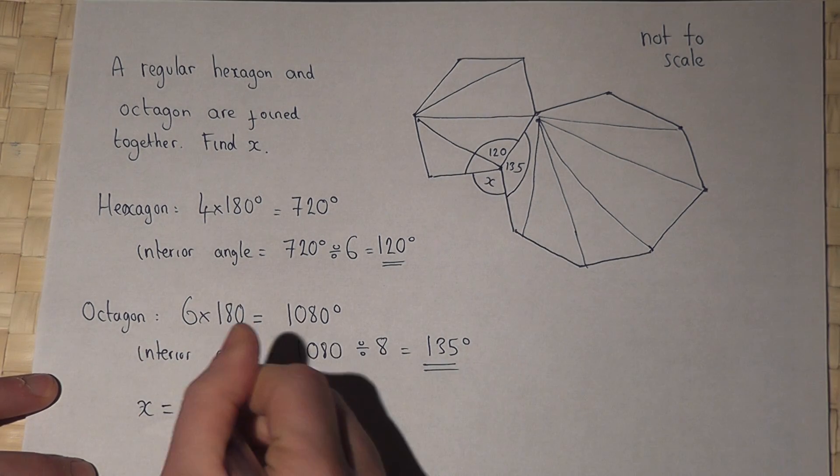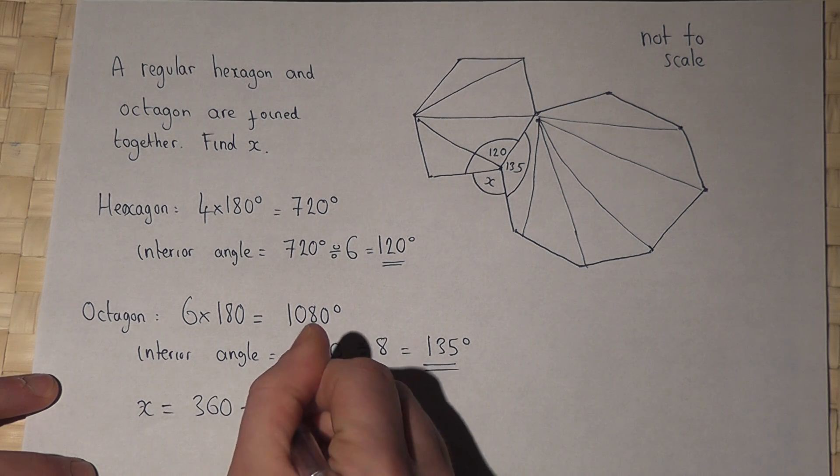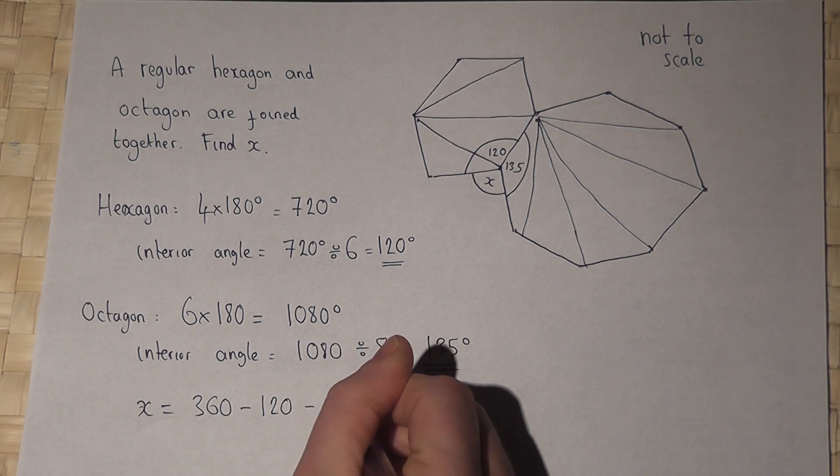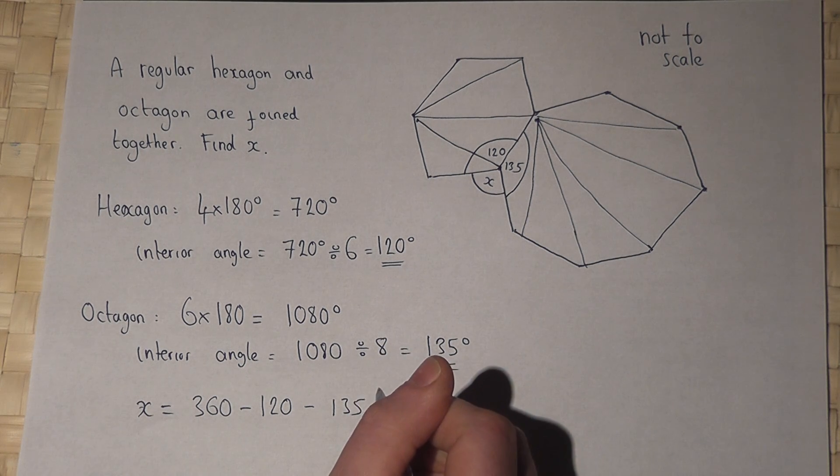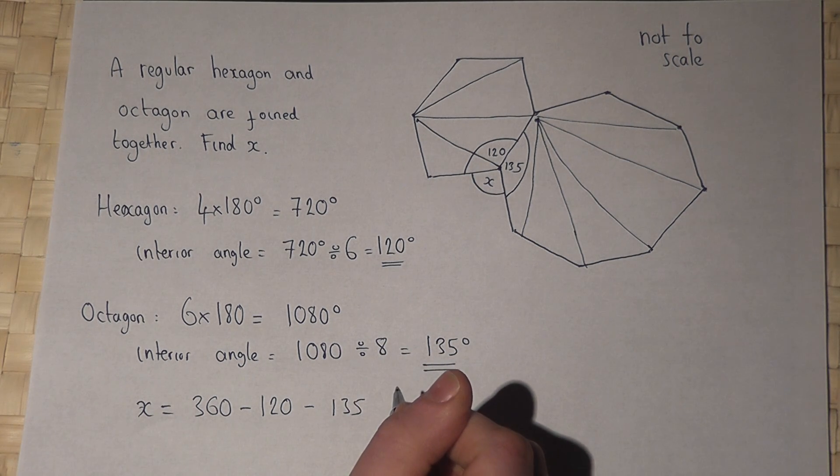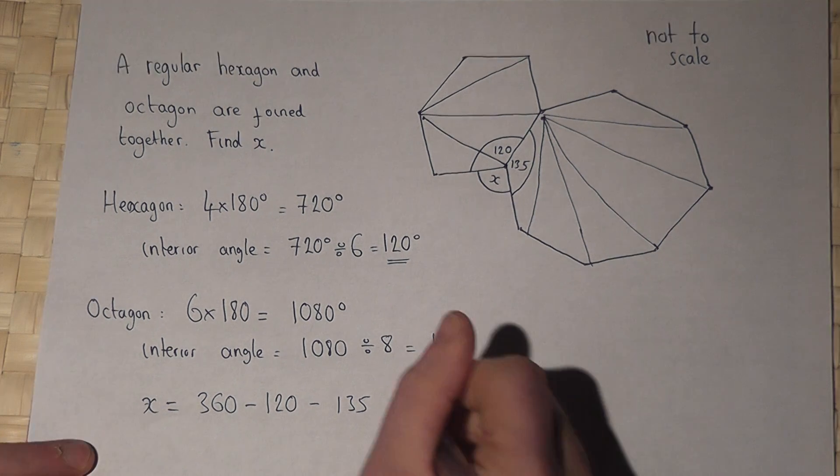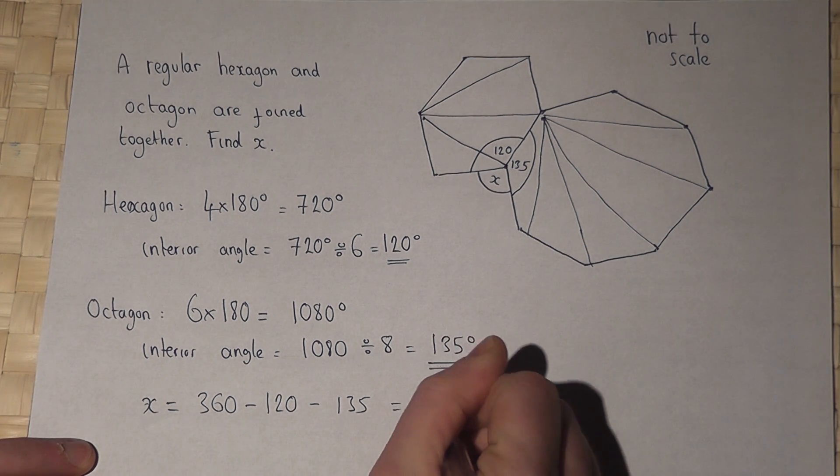So to find X, I do 360, I take away 120, and I take away 135. So if I work that out, the answer becomes 105 degrees.